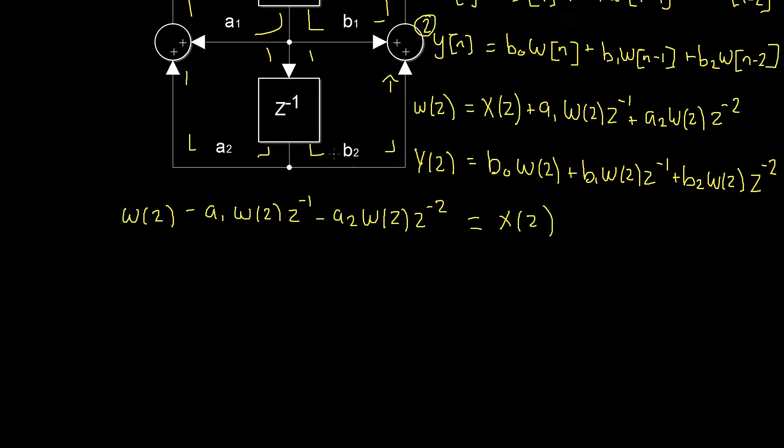Okay, so you might be able to notice that we have a w of z in all of our terms on the left hand side. Why don't we bring that out the front of the equation, and while we're at it, let's flip the side so that we have x of z on the left. We'll have x of z is equal to w of z outside the brackets, and then inside the brackets we have 1, because that will leave 1 minus a1 z to the power of negative 1 minus a2 z to the power of negative 2.